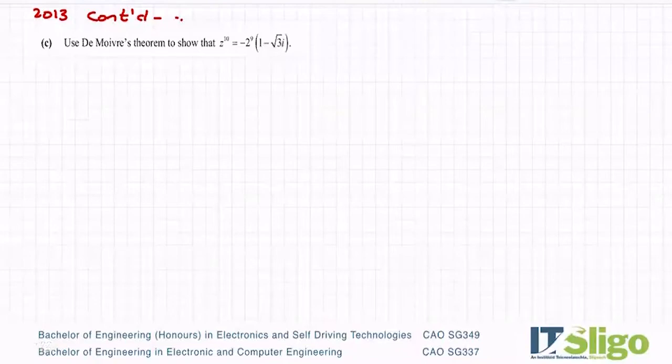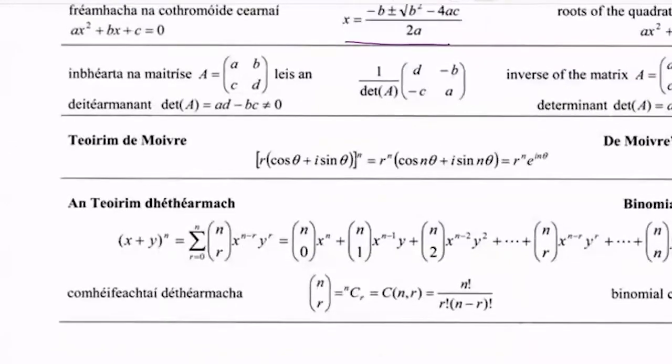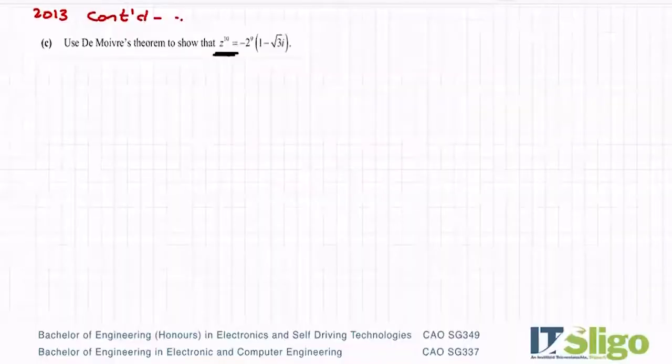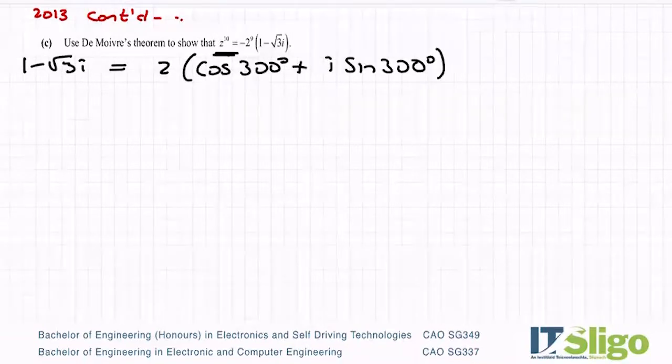And then the last part of the question asks you to apply De Moivre's theorem. So here it is in the log tables. De Moivre's theorem, when you have to do a power, this is what you follow. Don't hit the bit on the end. So when something is to a power, take r to the power and multiply the angle by the power. So our complex number 1 minus root 3i was 2 cos 300 degrees plus i sine 300 degrees. And the question says to work out z to the power of 10.